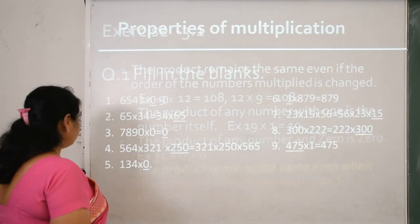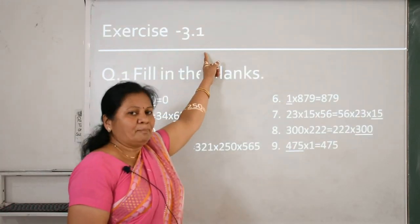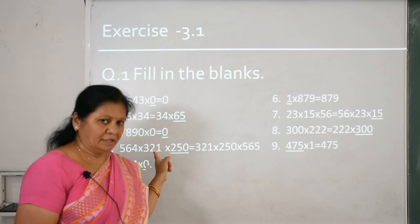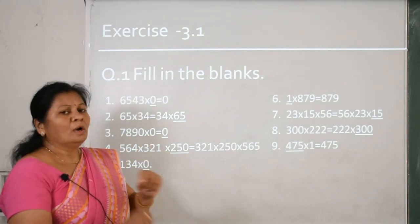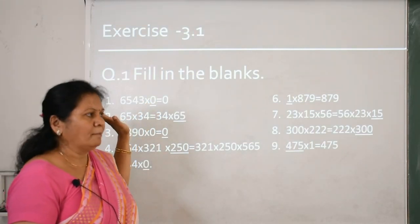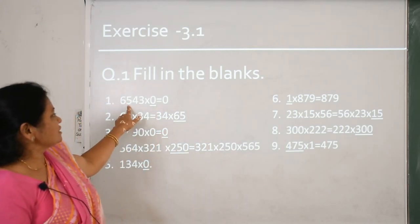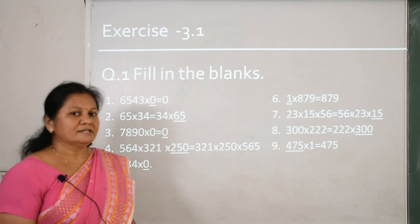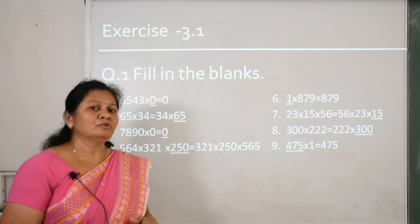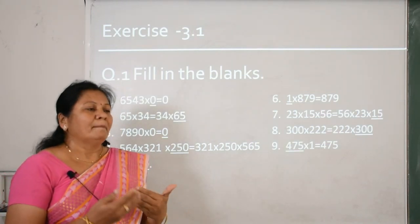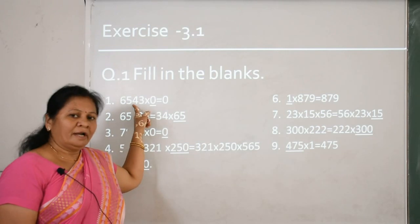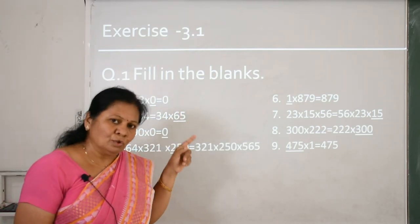Now let's see Exercise 3.1. Here you will fill in the blanks according to the properties. Question 1: 6543 multiplied by 0. We will use the zero property here. When any number is multiplied by 0, the answer is equal to 0. So 6543 multiplied by 0 is equal to 0.